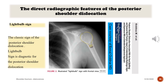Regarding direct radiographic features of posterior shoulder dislocation: the light bulb sign is the classic and diagnostic sign of posterior shoulder dislocation.